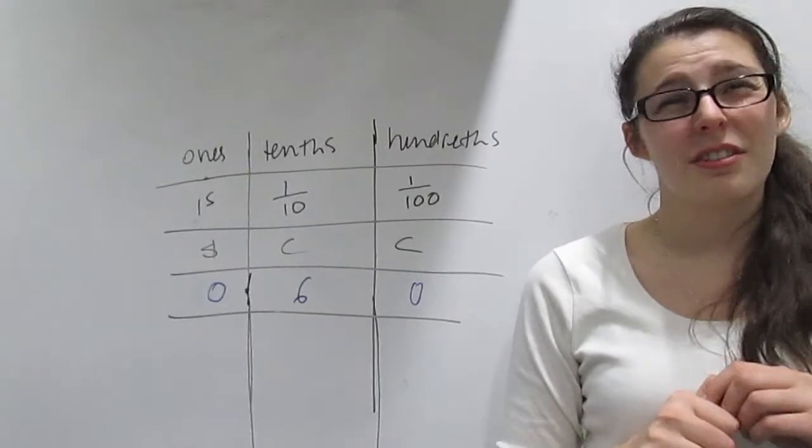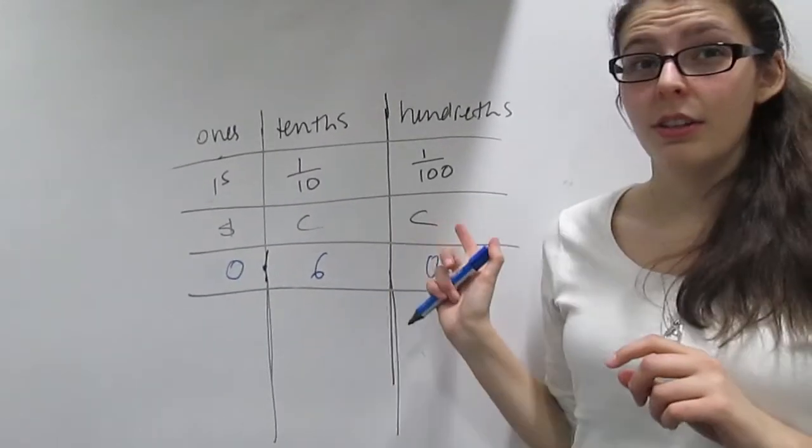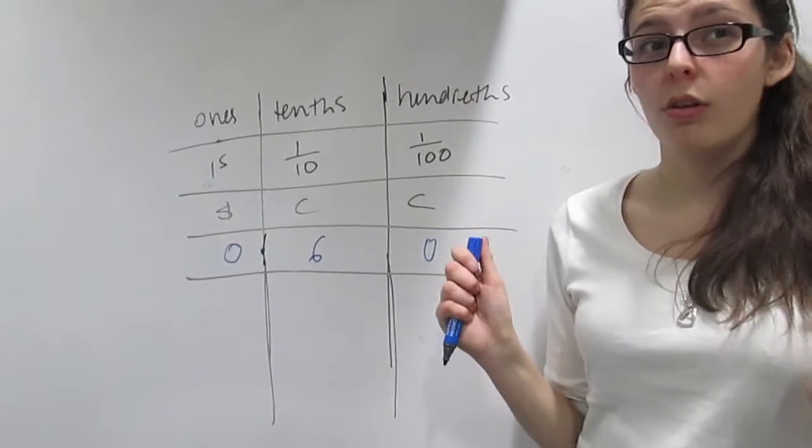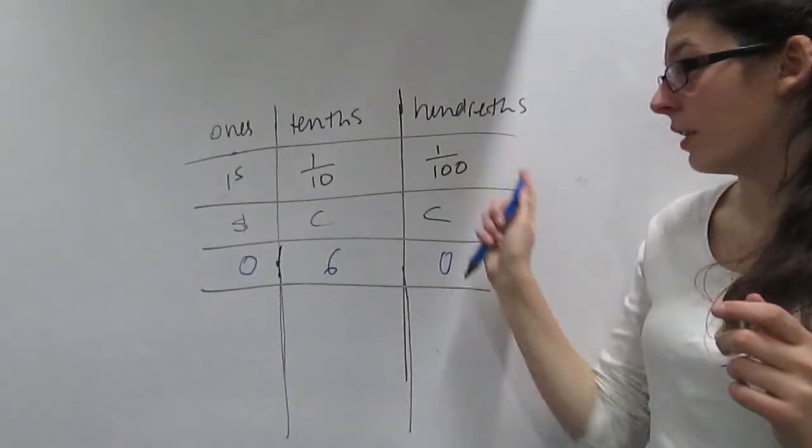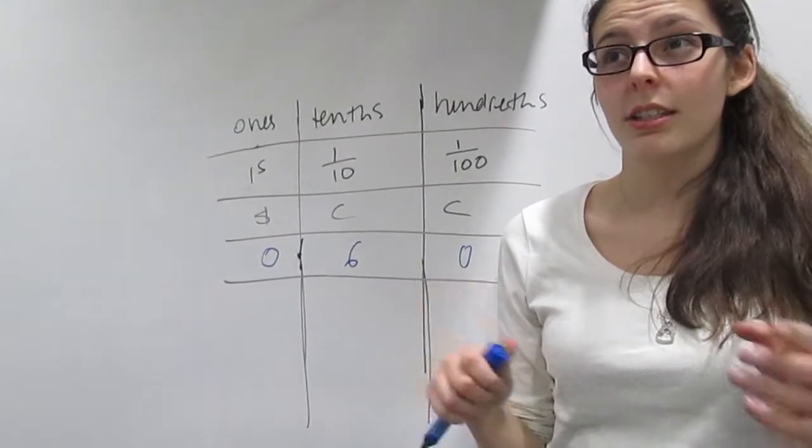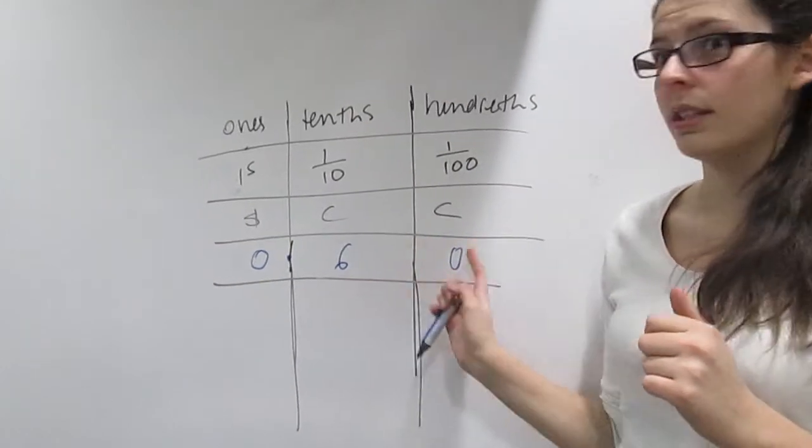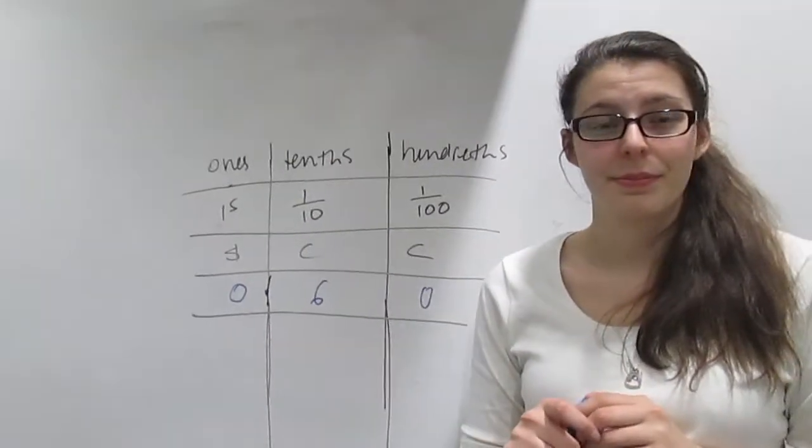It means that there are 0 ones, 6 tenths, 0 hundredths, or 60 hundredths, which equals 60 cents and as a decimal equals 0.60. Fantastic. Thank you Helen.